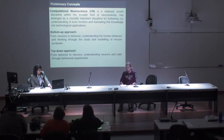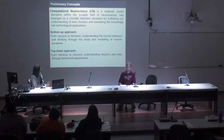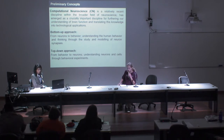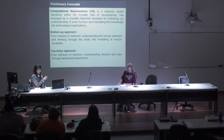So what is computational neuroscience? It is a relatively newborn branch of neuroscience which has an important role in trying to understand the brain using technological applications. For that, computational neuroscience uses two approaches. The first is a bottom-up approach — from neurons to behavior — understanding how humans think through modeling neurons and synapses.